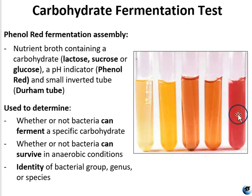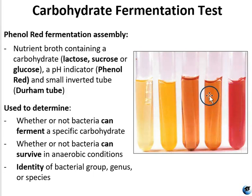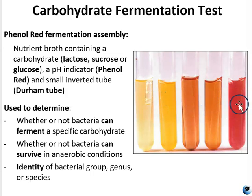What about a tube that looks unchanged? That's not a negative test result — it's a negative control. You would have a negative control tube for any of your phenol red fermentation tests so that you can compare it to the experimental results. Without the negative control, you might incorrectly call certain tubes negative because they look redder than others, when in fact they're more of an orange color compared to the negative control. That's why you use the negative control — it's for comparison.